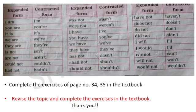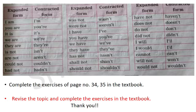Here is the table where we have the expanded form and contracted form. I am — I'm. You are — you're. It is — it's. We are — we're. They are — they're. Is not — isn't. Are not — aren't. Could not — couldn't. Had not — hadn't. In this way, read through these tables which are also in your textbook. Just give a reading to all the expanded forms and contracted forms.